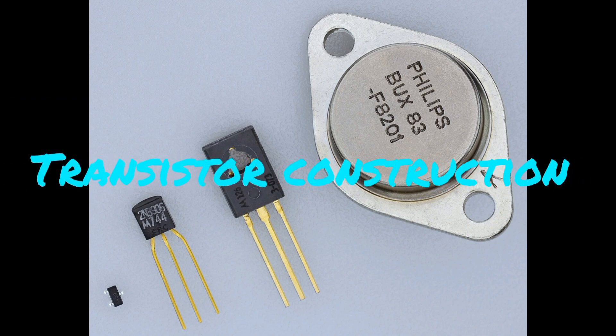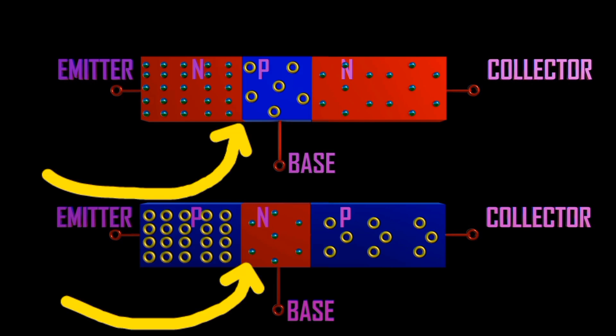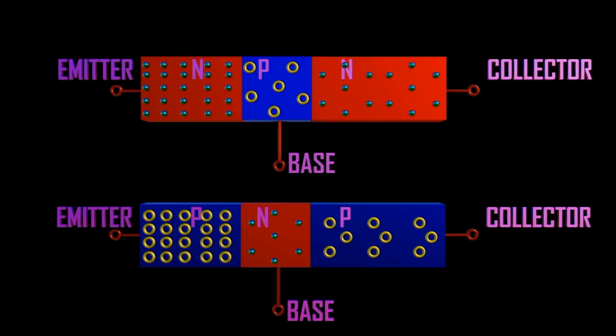Transistor construction: a transistor contains three regions — emitter, base, and collector — and can be either PNP or NPN. It contains two junctions: the base-collector and base-emitter junctions, hence the name bipolar junction. Since there are two junctions, a transistor can be considered as two diodes connected back to back.